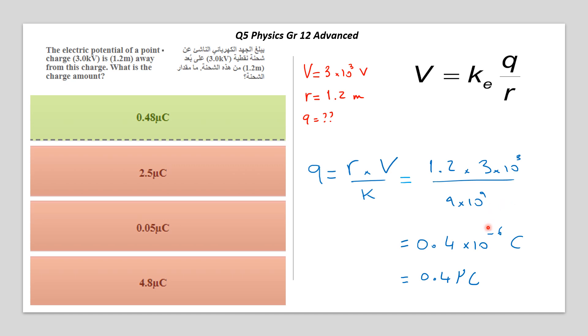By doing that on the calculator, you get 0.4 by 10 to the minus 6 Coulombs, or 0.4 microcoulombs. Again, the first answer is the correct answer.